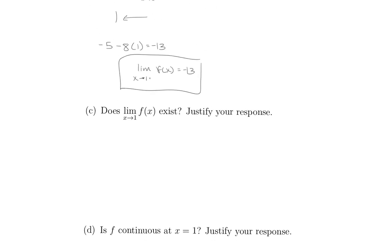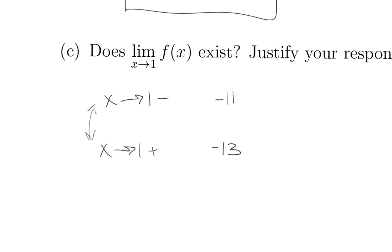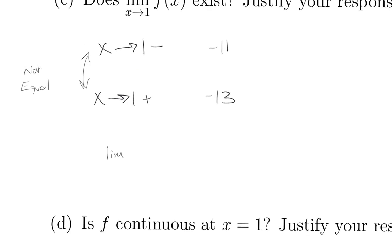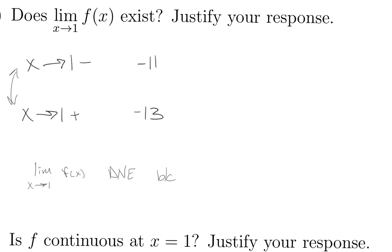Now on part c, we know that as we approach 1 from the left we have a value of negative 11, and as we approach 1 from the right we have a value of negative 13. These tell us that the function would be occupying two values at once, which cannot happen. Because these two are not equal, the limit as x approaches 1 of f of x does not exist, because the limits from both sides are not equal.